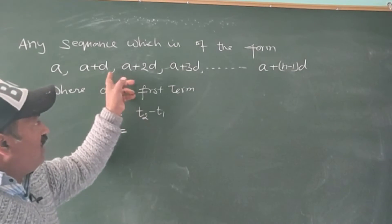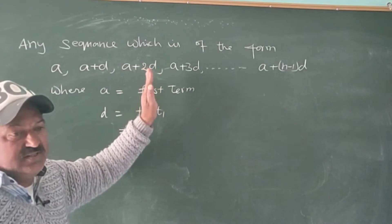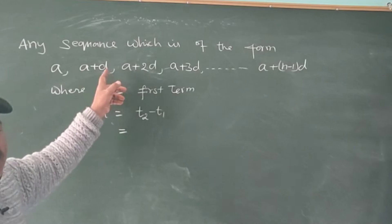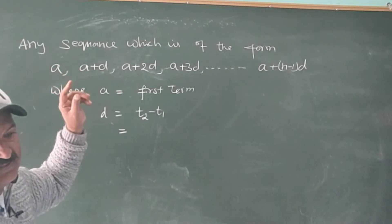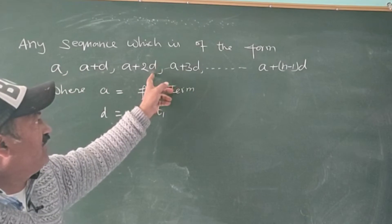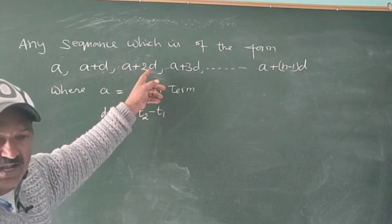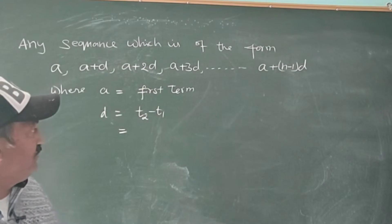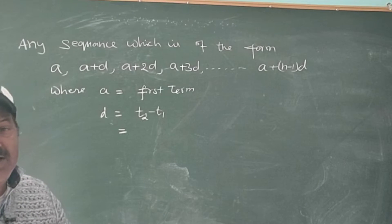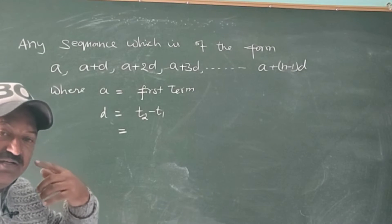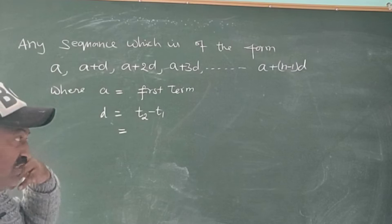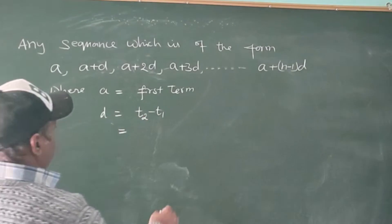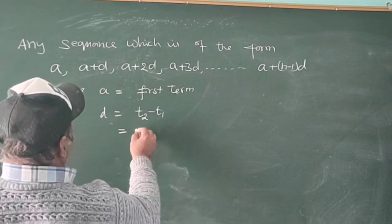There is always a common difference between two successive terms. Third minus second equals second minus first, and fourth minus third also equals third minus second. That difference is called the common difference, and it is generally obtained by subtracting the first term from the second term.